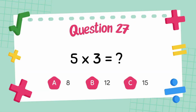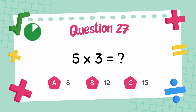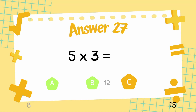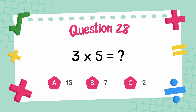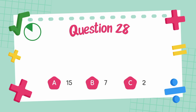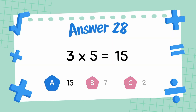What is 5 multiply 3? The answer is 15. What is 3 multiply 5? The answer is 15.